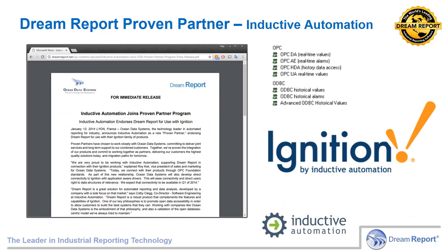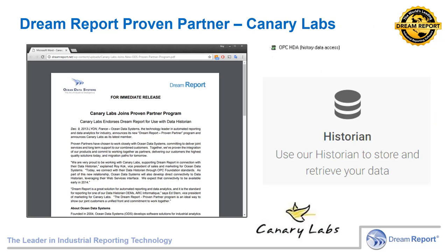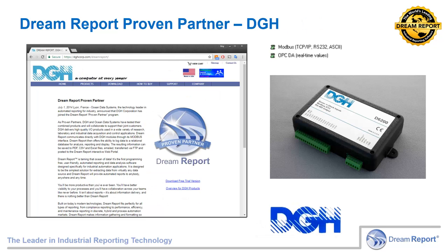Inductive Automation joined the Dream Report proven partner program. While they also have their own report solution, Dream Report is a very nice advanced solution for use with their Ignition product. Canary Labs offers a data historian product and is a proven partner — Dream Report easily connects with their historian using industry standards, specifically OPC-HDA. DGH is a supplier of I/O products used for data acquisition and control. They joined the Dream Report proven partner program to have a solution for data acquisition, analytics, and result delivery. Their products communicate over Modbus, among other things. Dream Report offers an internal Modbus driver and can also leverage third-party solutions such as KepServer EX Modbus through OPC connectivity.